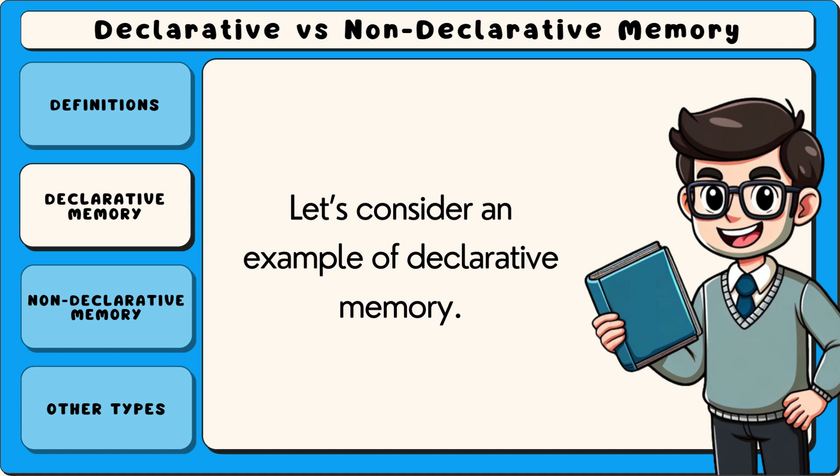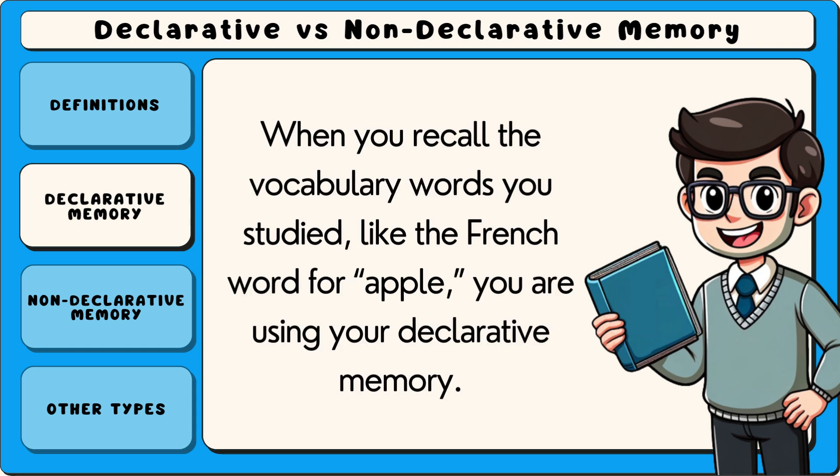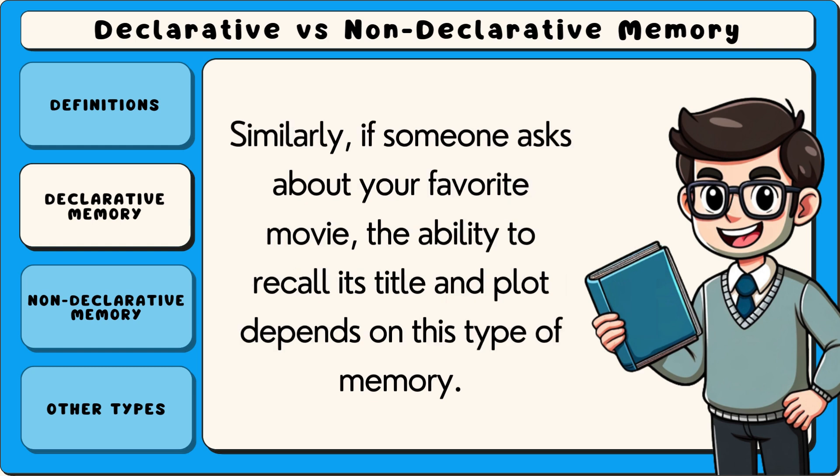Let's consider an example of declarative memory. Imagine you are learning a new language. When you recall the vocabulary words you studied, like the French word for apple, you are using your declarative memory. Similarly, if someone asks about your favourite movie, the ability to recall its title and plot depends on this type of memory.